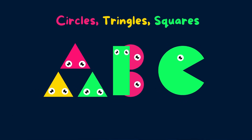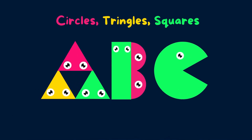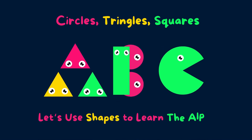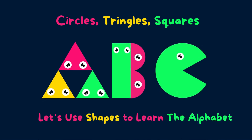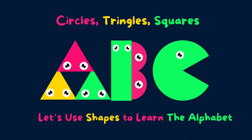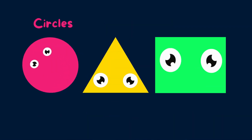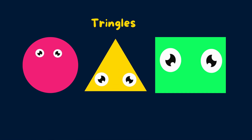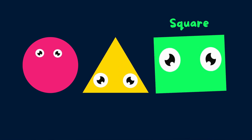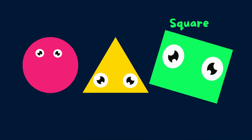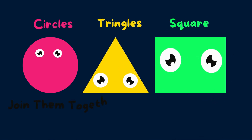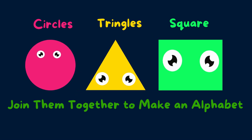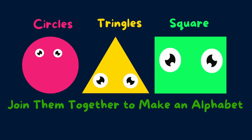Circles, triangles, squares. Let's use shapes to learn the alphabet. Circles. Triangles. Squares. Join them together to make an alphabet.